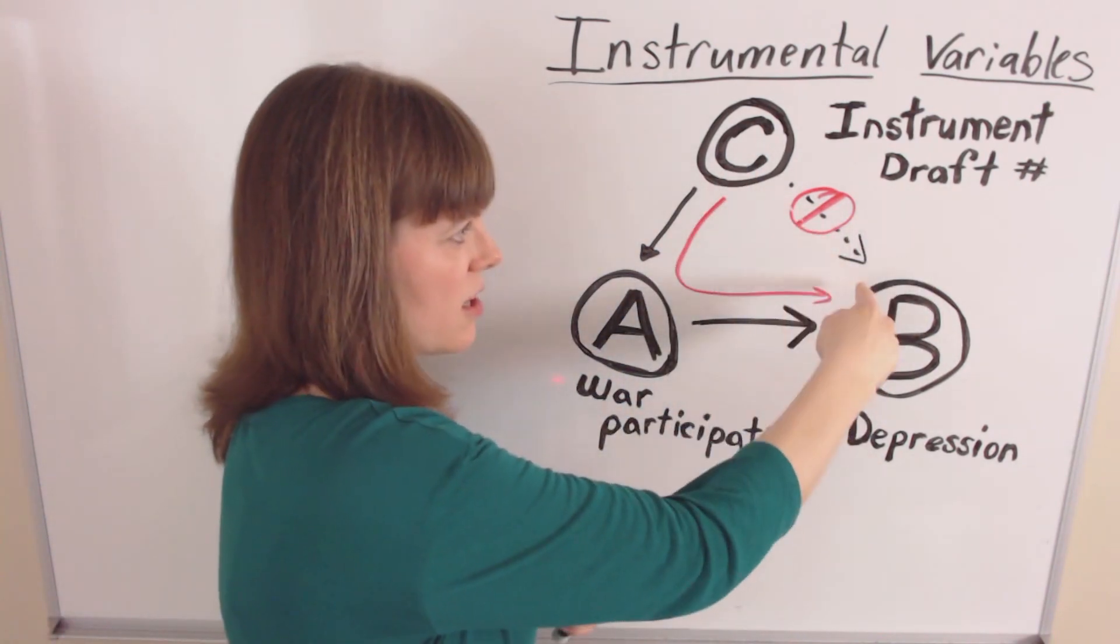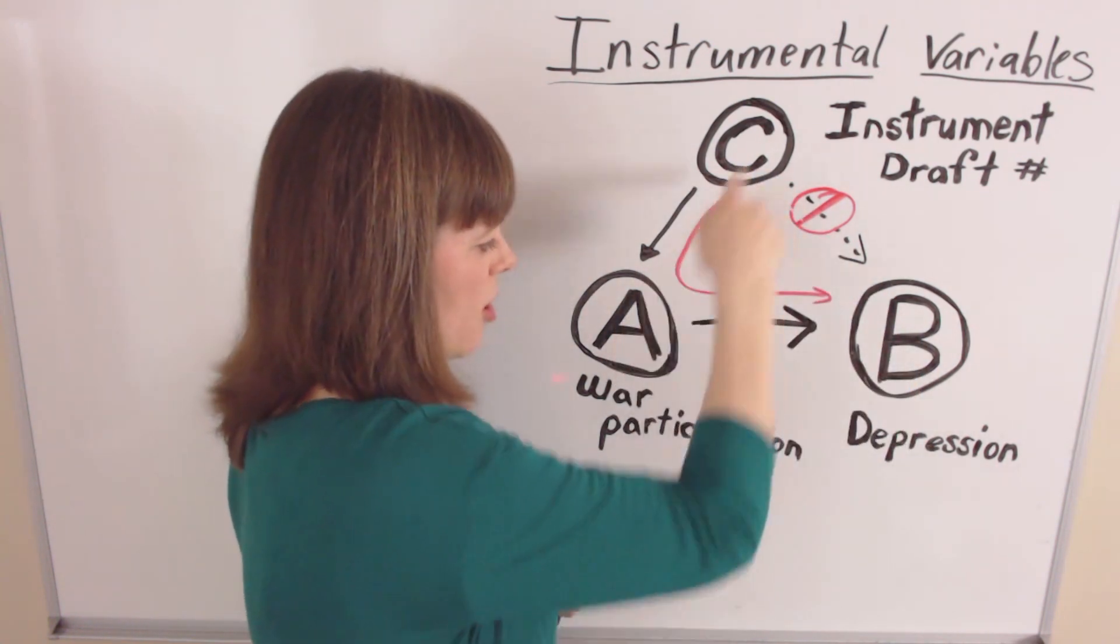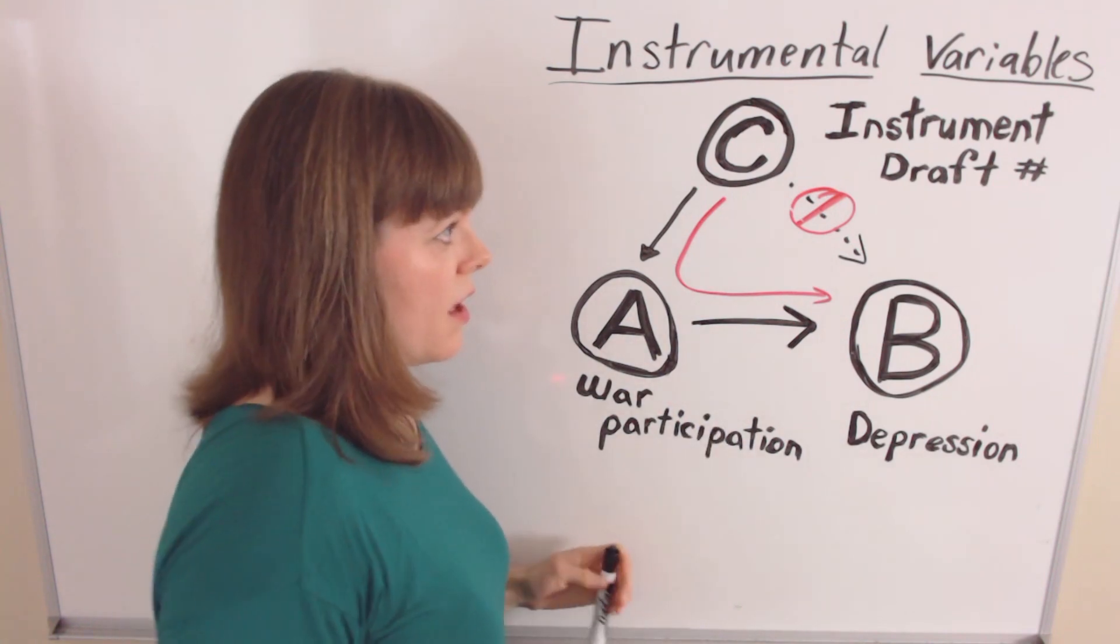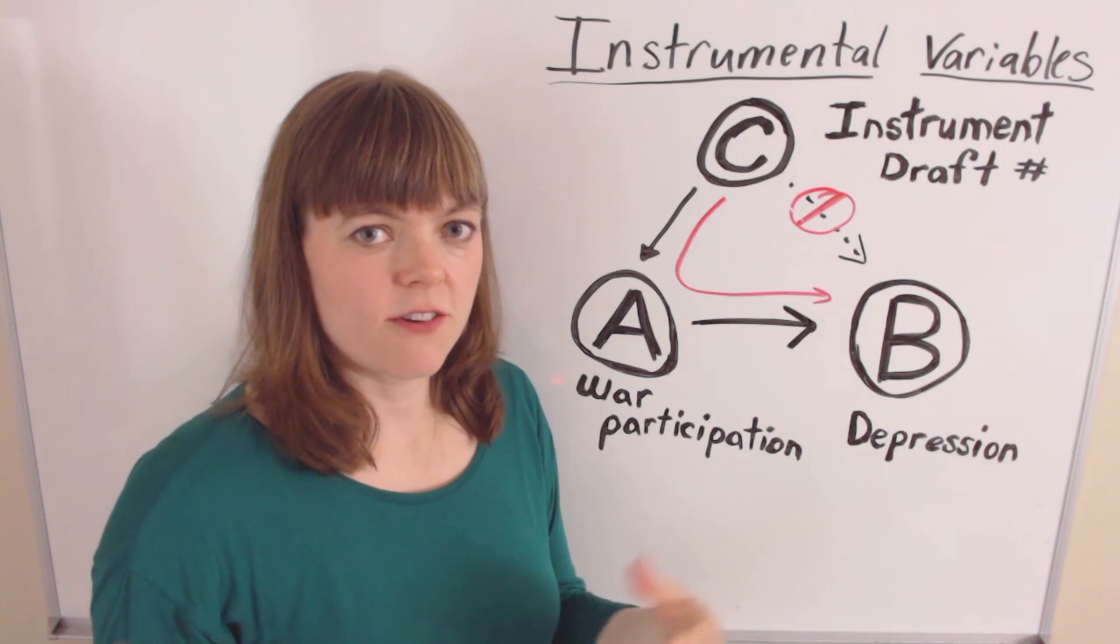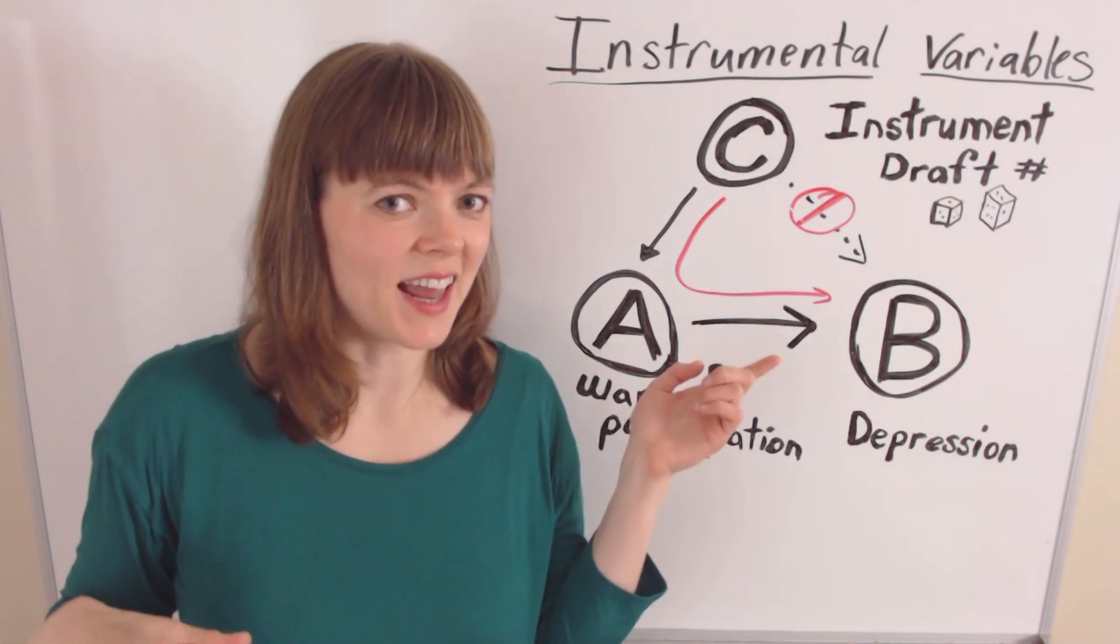So there's no association, no theoretical association between the draft number and depression, but a strong association between the draft number and war participation. And the draft number and the instrument is our source of exogenous variation. It's our source of randomness. Hence the dice.